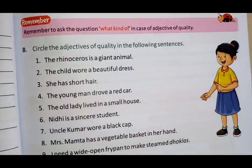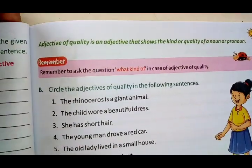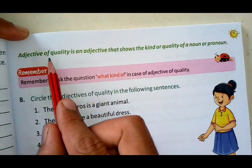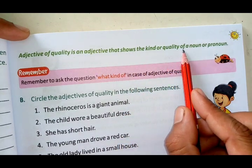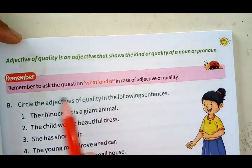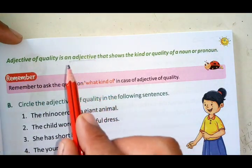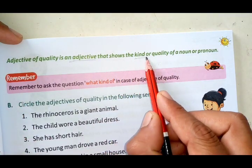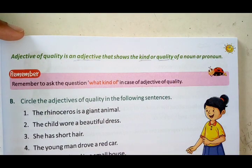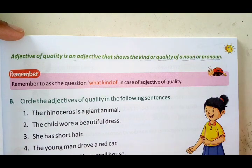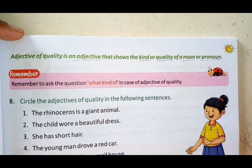Let's see more examples on page number 61. The definition of adjective of quality: an adjective of quality is an adjective that shows the kind or quality of a noun or pronoun — whether it is good or bad, what type it is. The words that describe the quality of a noun or pronoun are known as adjectives of quality.